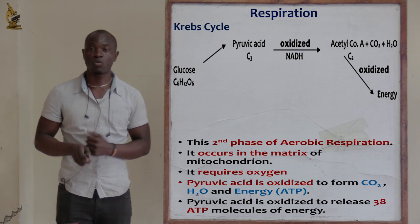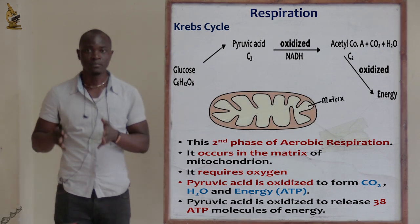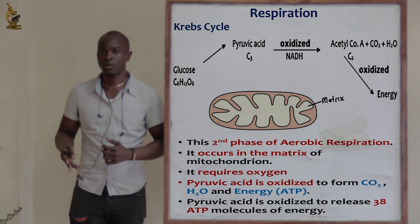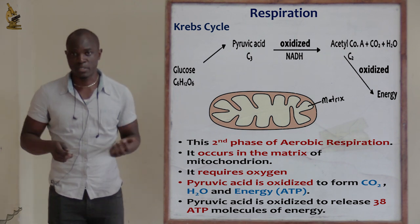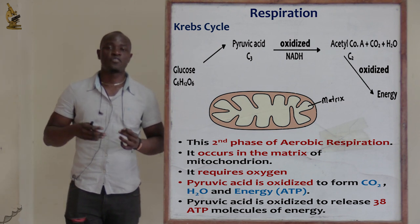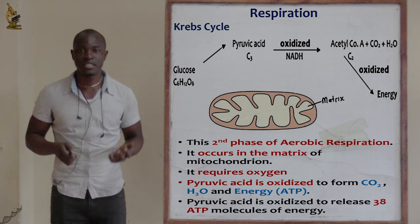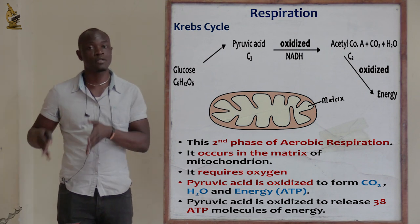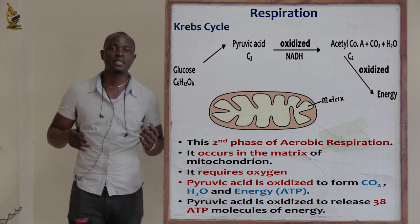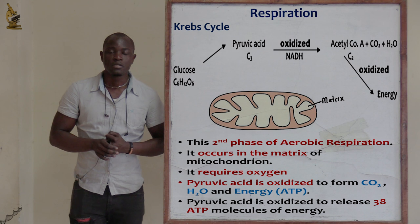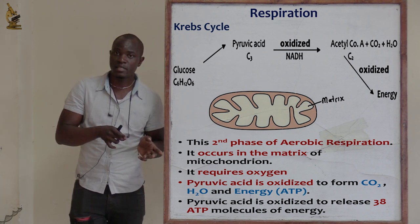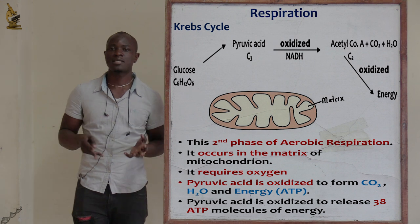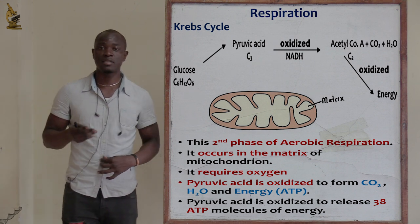Now let's look at the Krebs cycle. The Krebs cycle is the second phase of aerobic respiration, and it mainly takes place in the matrix of the mitochondrion. Unlike glycolysis, which begins in the cytoplasm, the Krebs cycle takes place in the mitochondrial matrix. Oxygen must be used in the Krebs cycle — this is the major difference between glycolysis and the Krebs cycle.